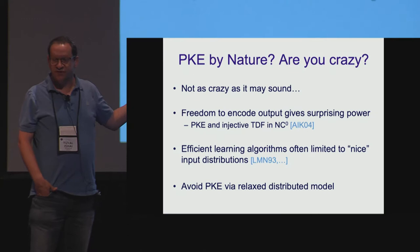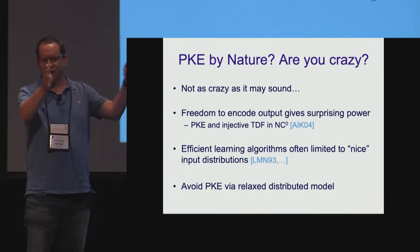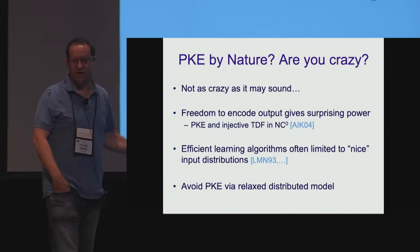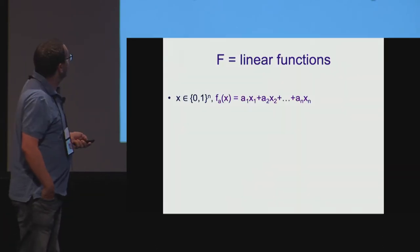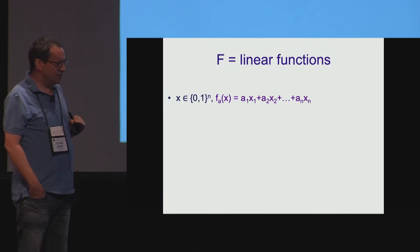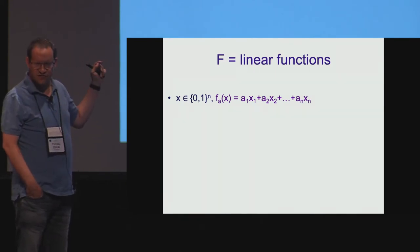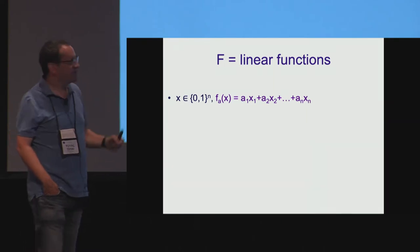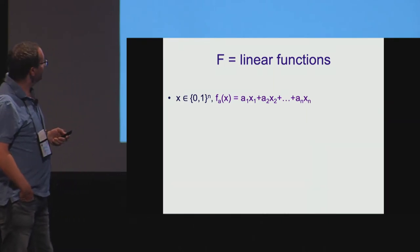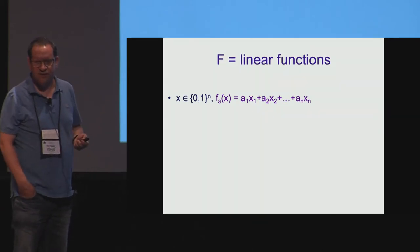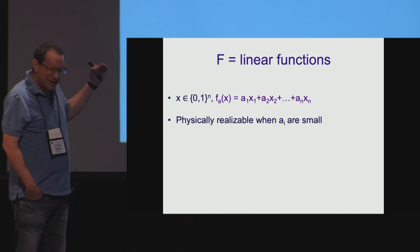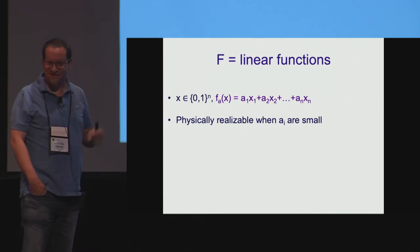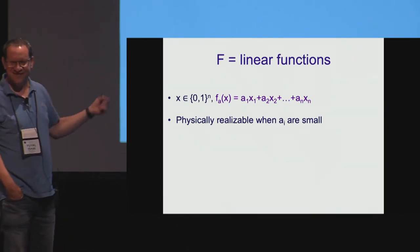Finally, in the paper we also propose a distributed model where you can use two different labs and only insist that each individual lab learns nothing from the experiments it conducts. In this setting, there is no PKE barrier. Now let me focus on the simple class of linear functions. Here we view the object as a vector in {0,1}^n—think of it as black or white, hole or no hole. A measurement is defined by a linear combination over the integers with coefficients a_i. I hope I convinced you that this is physically realizable, at least when the a_i's are small—this can correspond to the intensity of the water stream or the size of a ping-pong ball.